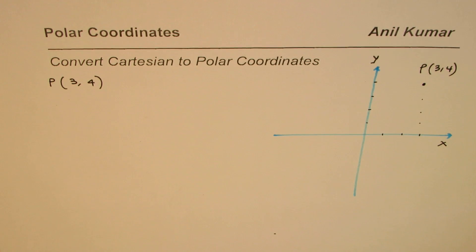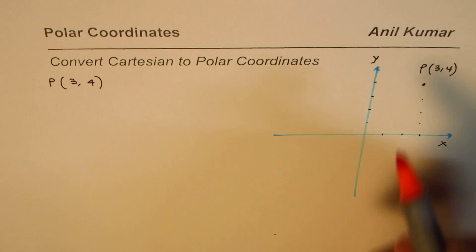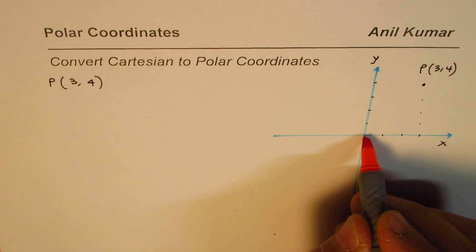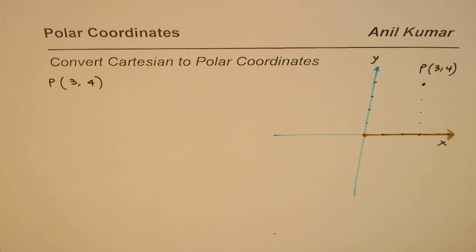Now if I have to convert it to polar coordinate system, what do I do? So I make another scale. Let me think that we put the scale on this. So it will have a pole here and the polar axis. So this becomes the polar axis.